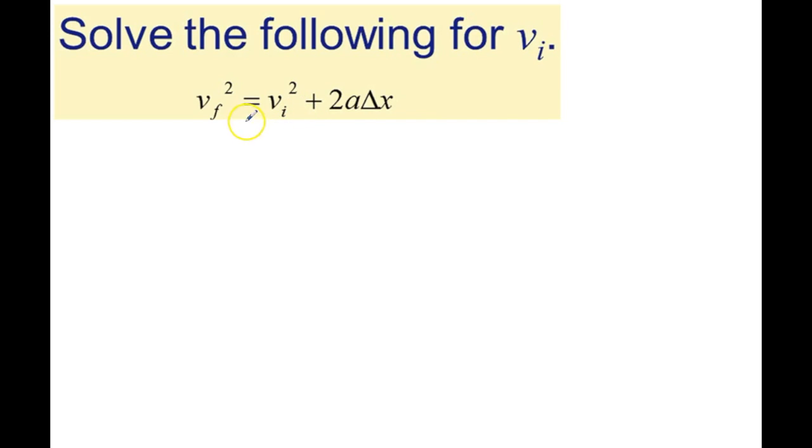So if we subtract the right side by 2a delta x, and if you're doing it to the right side, you must do it to the left side. So minus 2a delta x.